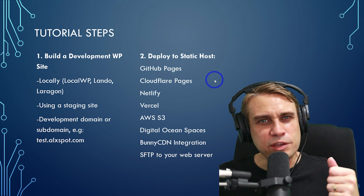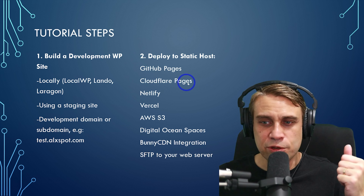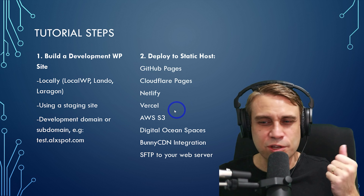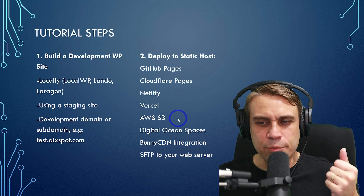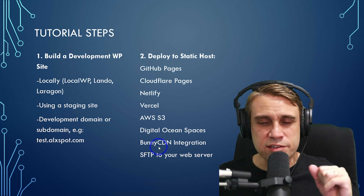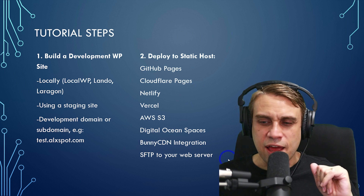There are lots of places where you can deploy a static website. Today we're going to use Cloudflare Pages, but there's also GitHub Pages, Netlify, AWS, DigitalOcean Spaces. Bunny is a really fast, cheap one. And you can SFTP the data into basically any web server. A lot of these offer very nice free tiers or very low cost pro tiers, so this is the free option we're going to use today.